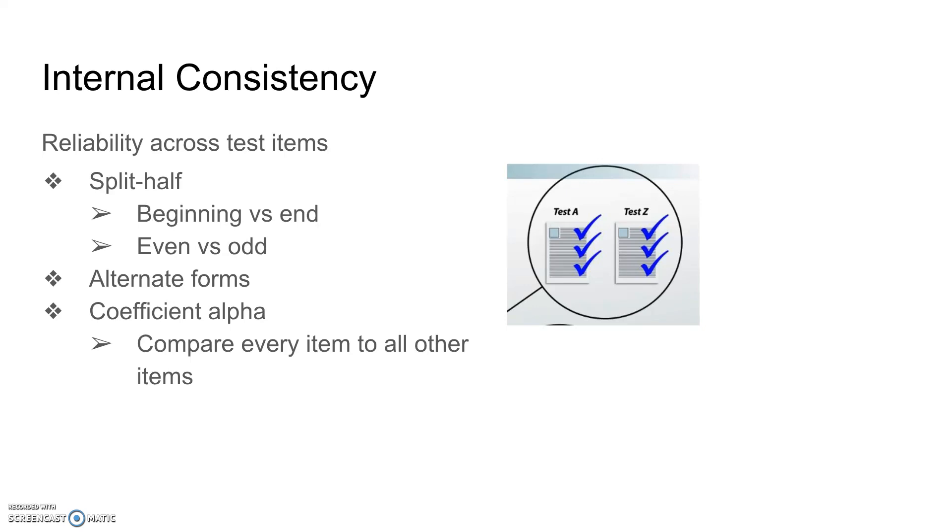The third and most effective option is coefficient alpha. Coefficient alpha is where you compare every single test item to every other test item on the test to determine consistency within the test.